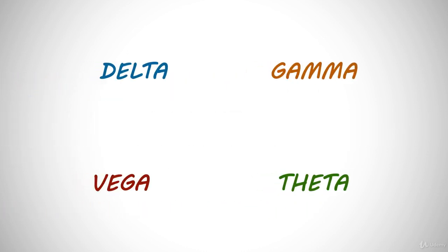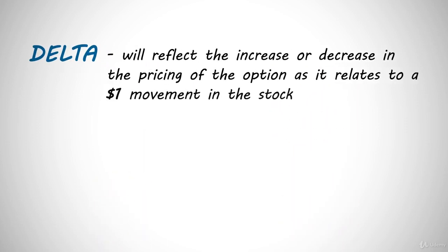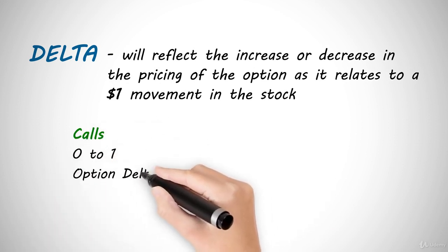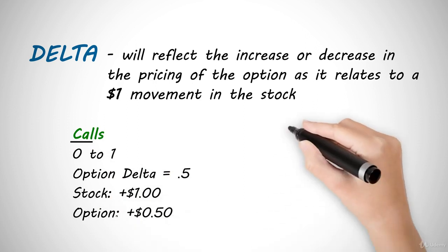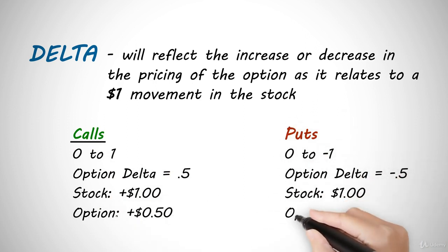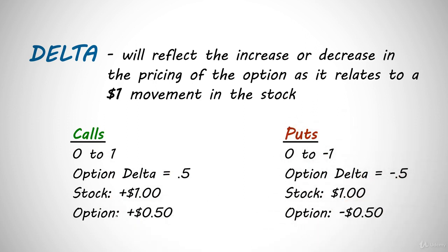Options traders often refer to the delta, gamma, vega, and theta when discussing their positions, so these are the ones we're going to cover in this course. The first Greek every new trader learns is delta. The delta will reflect the increase or decrease in the pricing of the option as it relates to a $1 movement in the stock, also known as the theoretical change in the option pricing as it's affected by stock movement.